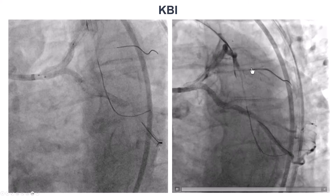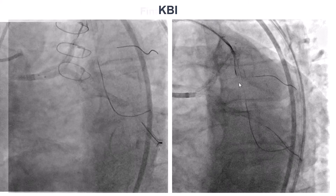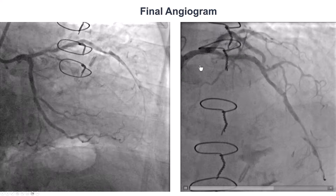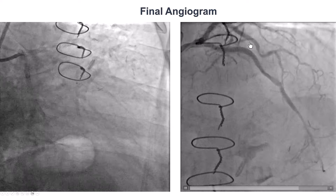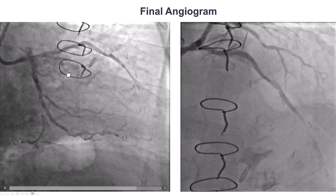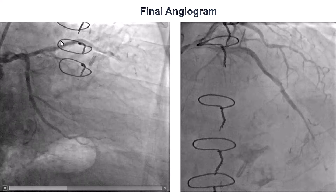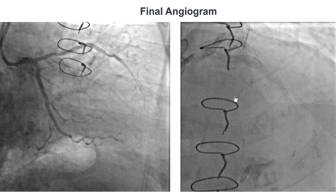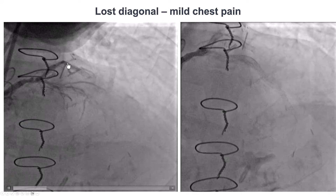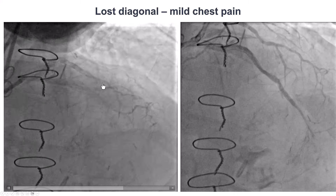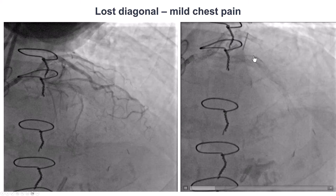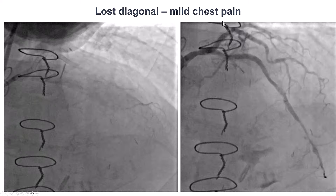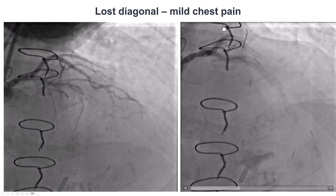We advanced a guidewire into the diagonal branch, which was preserved, and achieved a nice final result with TIMI 3 flow into the LAD. However, we did lose the small diagonal branch that was present at the beginning. It was present before and missing afterwards, likely causing the patient's mild chest discomfort and mild EKG changes. But he did pretty well overall.